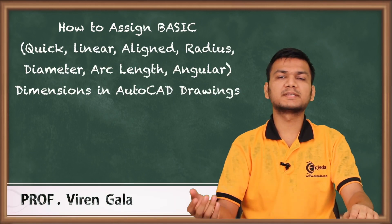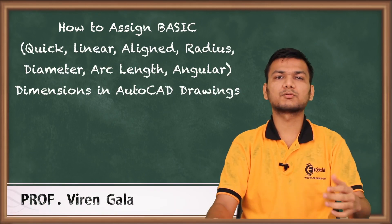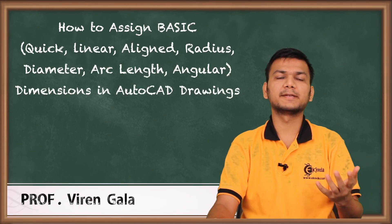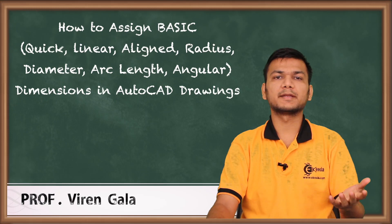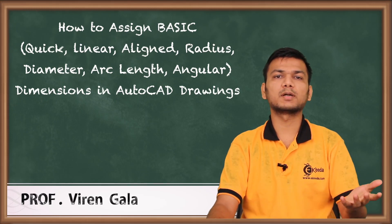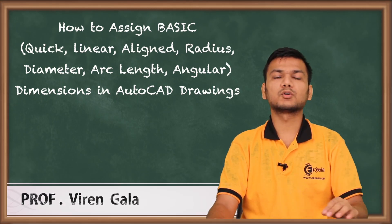Today we will learn how to assign the basic dimensions: quick dimension, linear dimension, radius dimension, diameter dimension, and angular dimension.